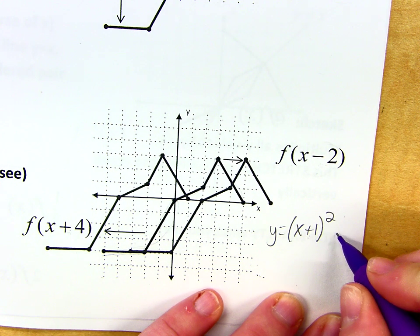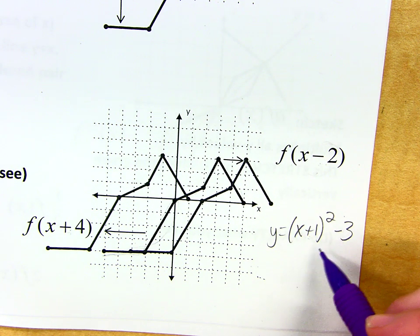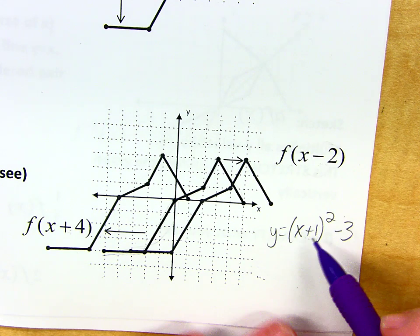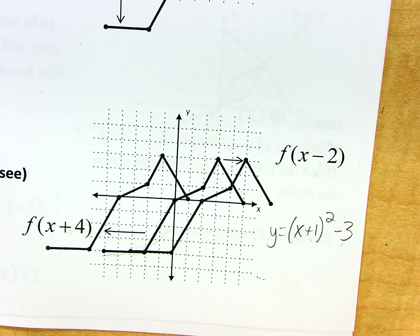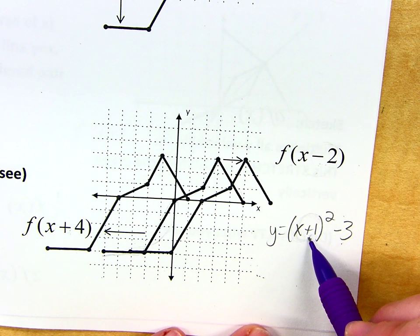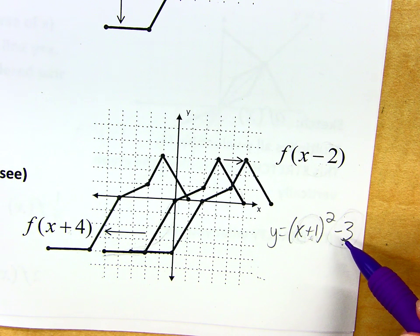I'm not only going to do one shift every time — sometimes I'll do two things. I might move it left or right and up or down. So this is going left 1 and down 3. I'd start off with my parent function and then take each point and move it left 1 and down 3. If it's in there with the x, it's a left or right shift and you do the opposite of what you see. If it's tacked on to the end, it's a vertical shift and I do what it tells me to do.